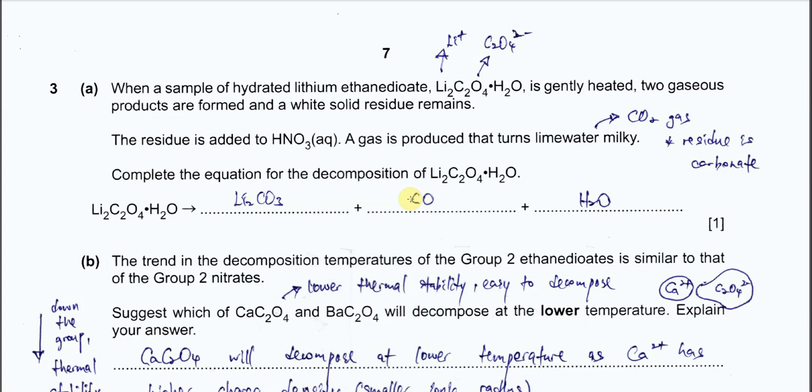Question 3. When a sample of hydrated lithium ethanedioate is gently heated, two gaseous products form and a white solid residue remains. The residue is added to nitric acid, and gas produced turns limewater milky. So we are quite sure now the residue is carbonate, because when we put this residue in acid it forms CO2 gas. So we are quite sure it's lithium carbonate.